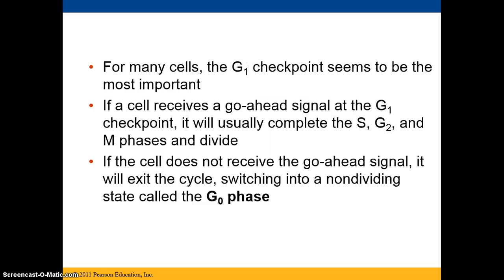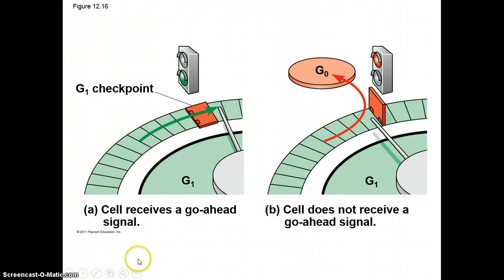For many cells, the G1 checkpoint is the most important. If a cell receives a go-ahead signal at G1, it will usually complete S, G2, and M phases, then divide. But if it does not receive the go-ahead signal, it exits the cell cycle and switches to a non-dividing state called the G0 phase. Cells that are density-dependent will switch to G0 simply because there's no room left for them to grow.